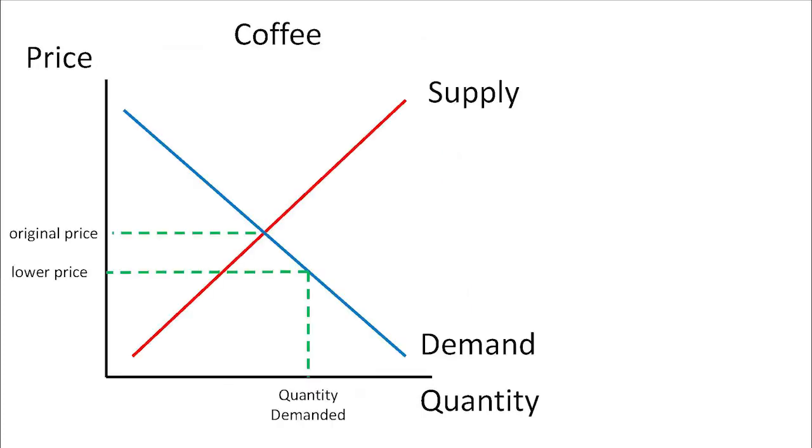What does happen is when the price falls, we have a new quantity demanded. The quantity demanded is where the new price intersects with the demand curve. Notice demand didn't shift, but the quantity demanded changed. There's a difference between a change in demand and a change in quantity demanded. We moved along the demand curve as a result of the price change. We're also going to move along the supply curve, resulting in a new quantity supplied. Supply didn't change, but the quantity supplied changed.